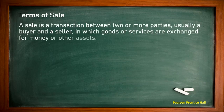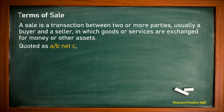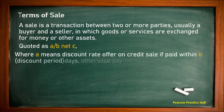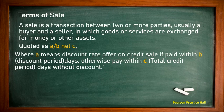For understanding terms of sale: a sale is a transaction between two or more parties, usually a buyer and a seller, in which goods or services are exchanged for money or other assets. Terms of sale are expressed as A/B net C, where A means the discount rate offered on a credit sale if paid within B days; otherwise the full payment is due within C days without discount.